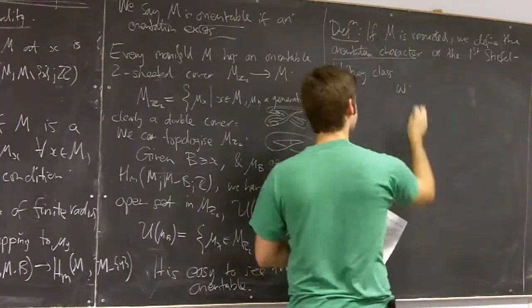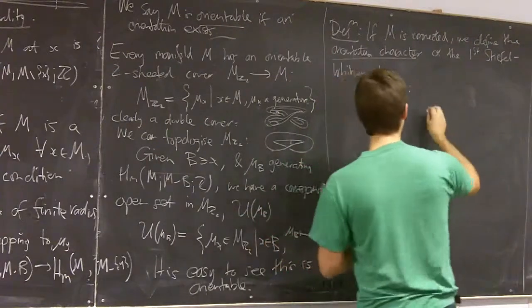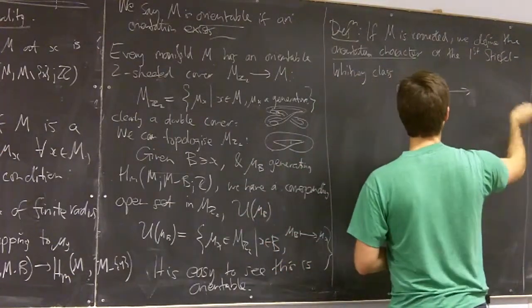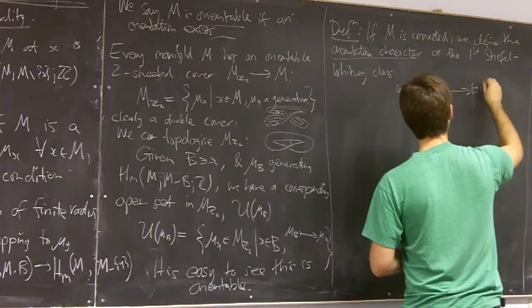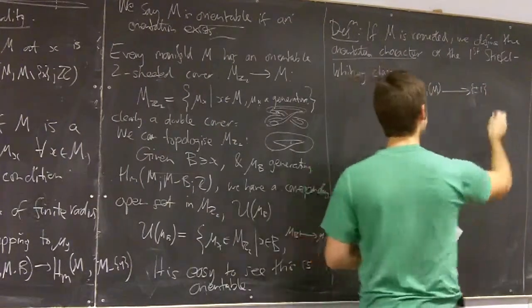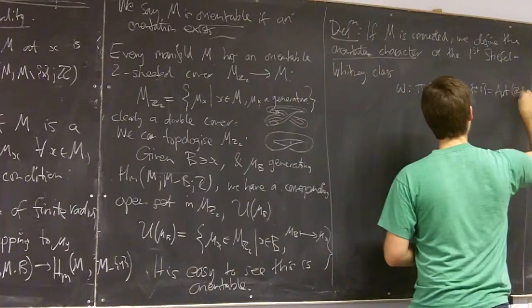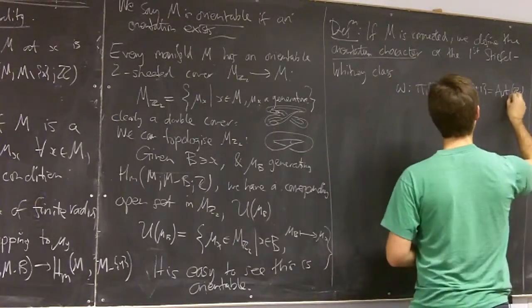and this is also called the orientation character or the first Stiefel-Whitney class and this is a homomorphism from the fundamental group of M to {±1} which we're thinking of as the automorphisms of Z